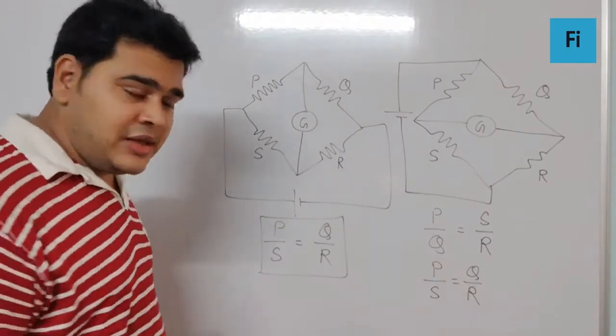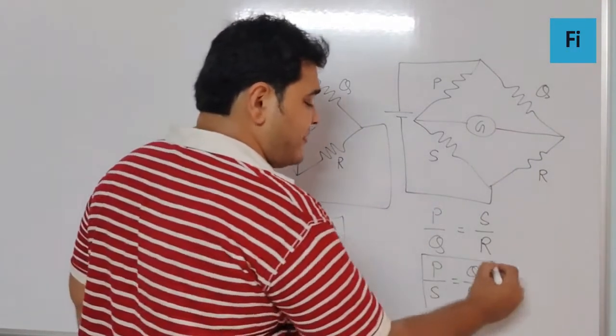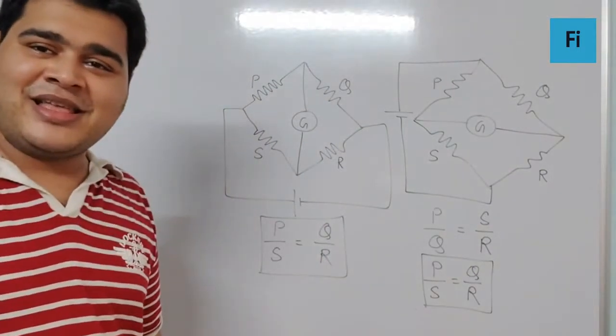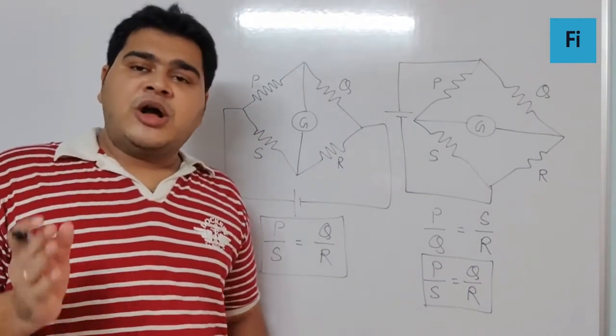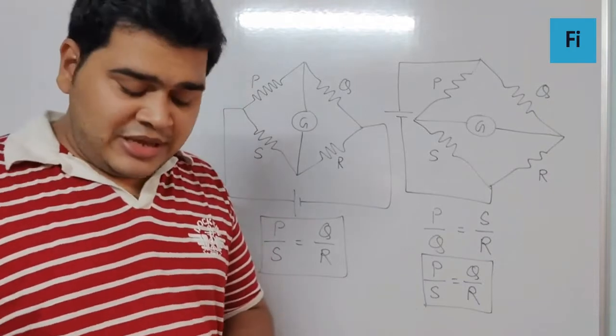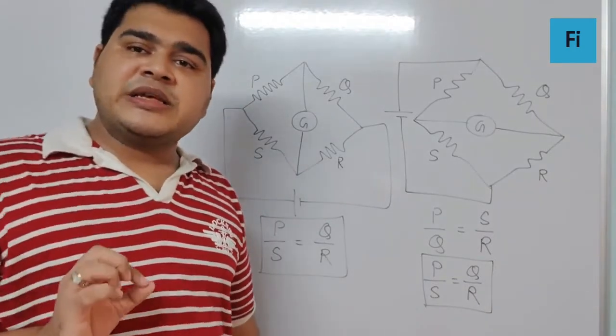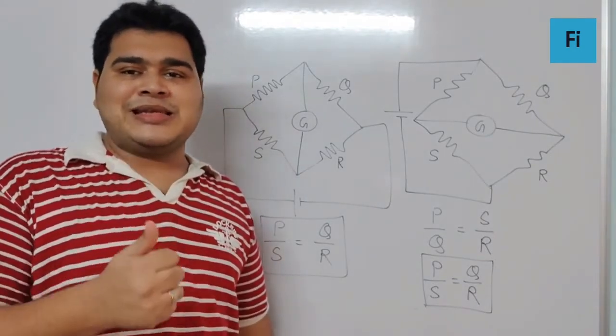So if you check, in this condition we get this as a balancing condition, and for this condition we can have the same balancing condition again. That means even if we change or interchange the galvanometer and the battery position, I can say the balancing condition remains the same.